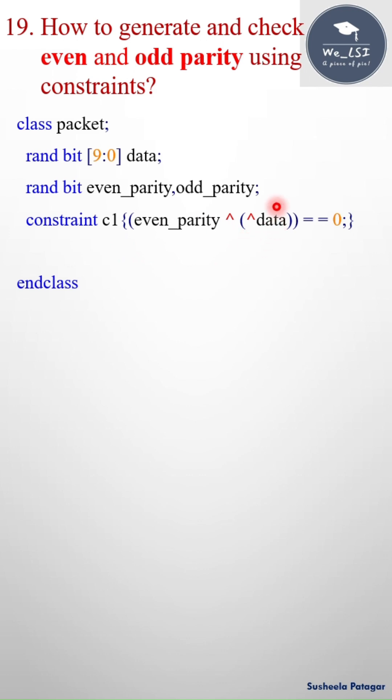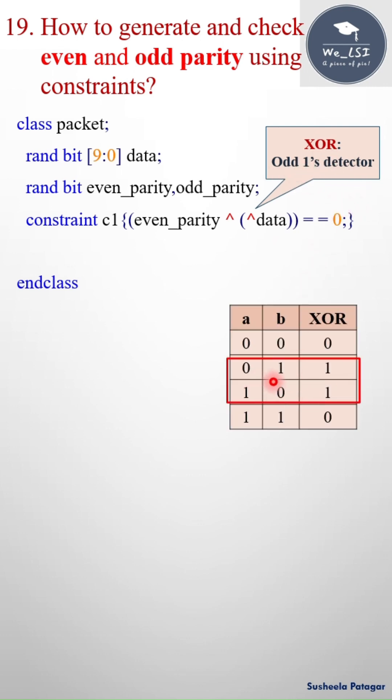My constraint is even_parity XOR data equals zero. Why have I written it like this? Because we know that XOR gate can be called an odd ones detector. That means for odd number of ones it will return one, and for even number of ones it will return zero.